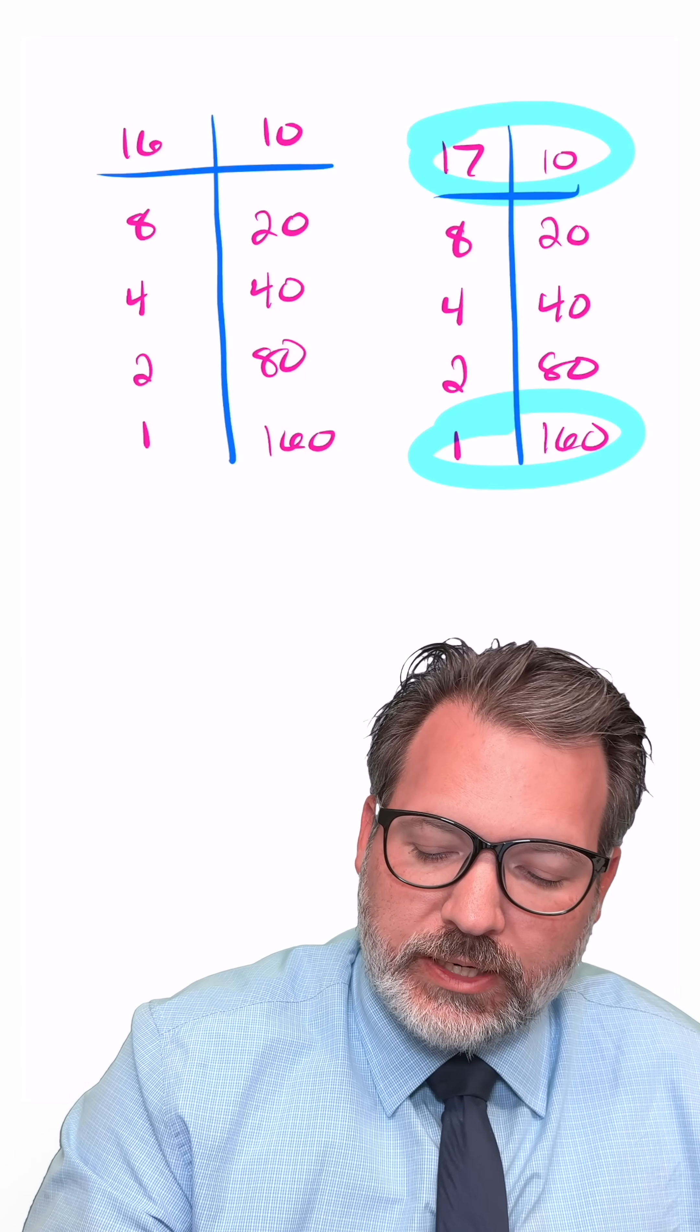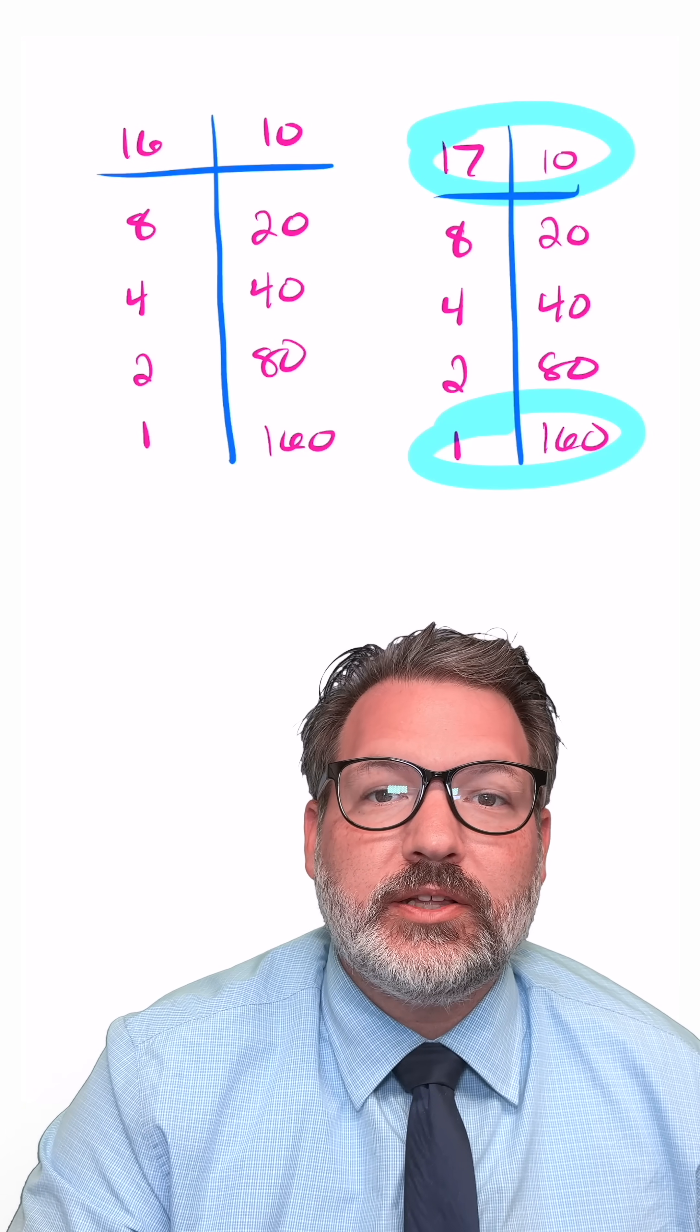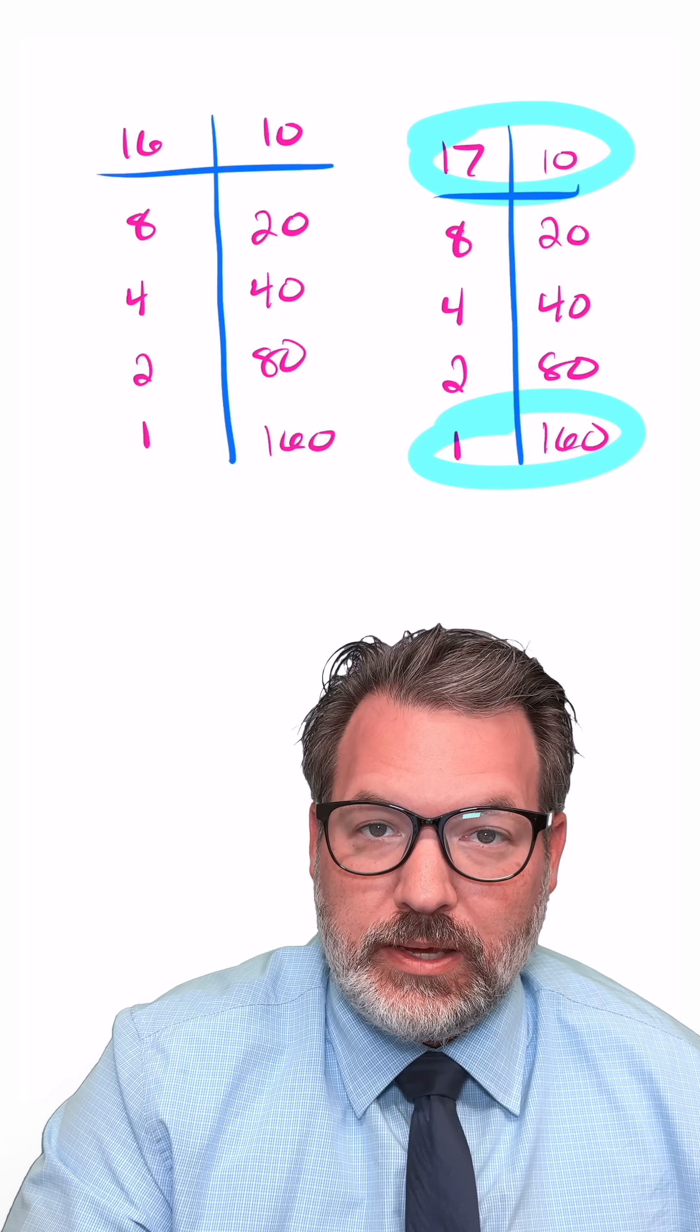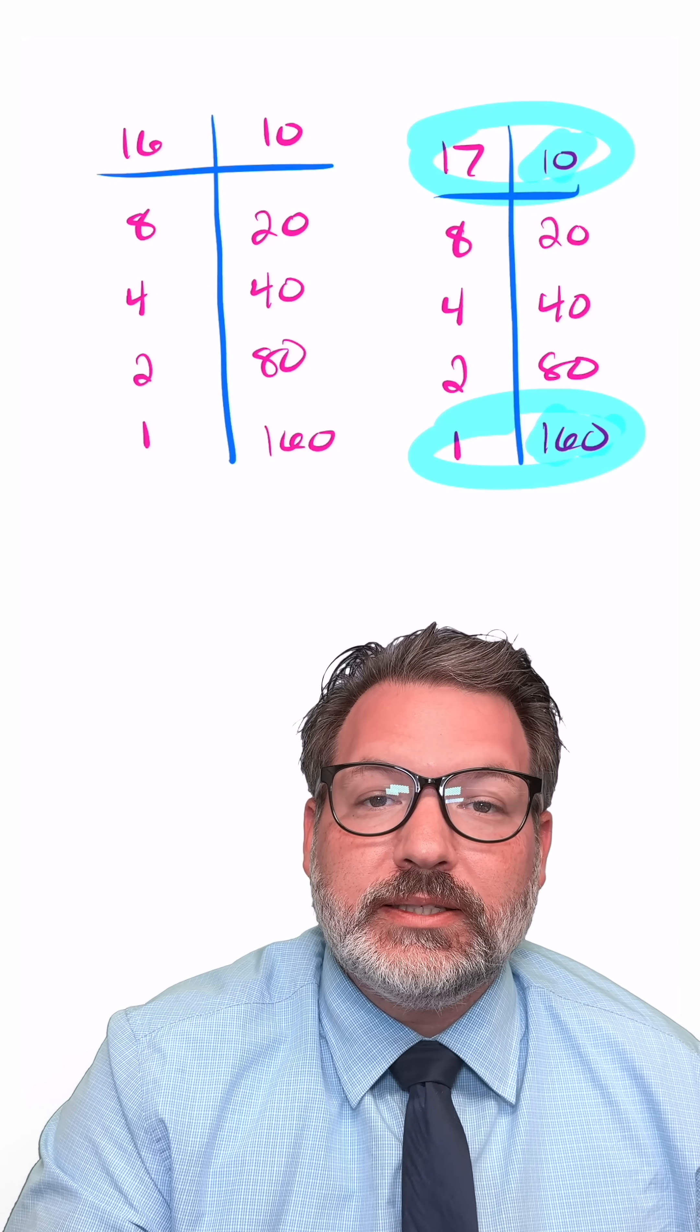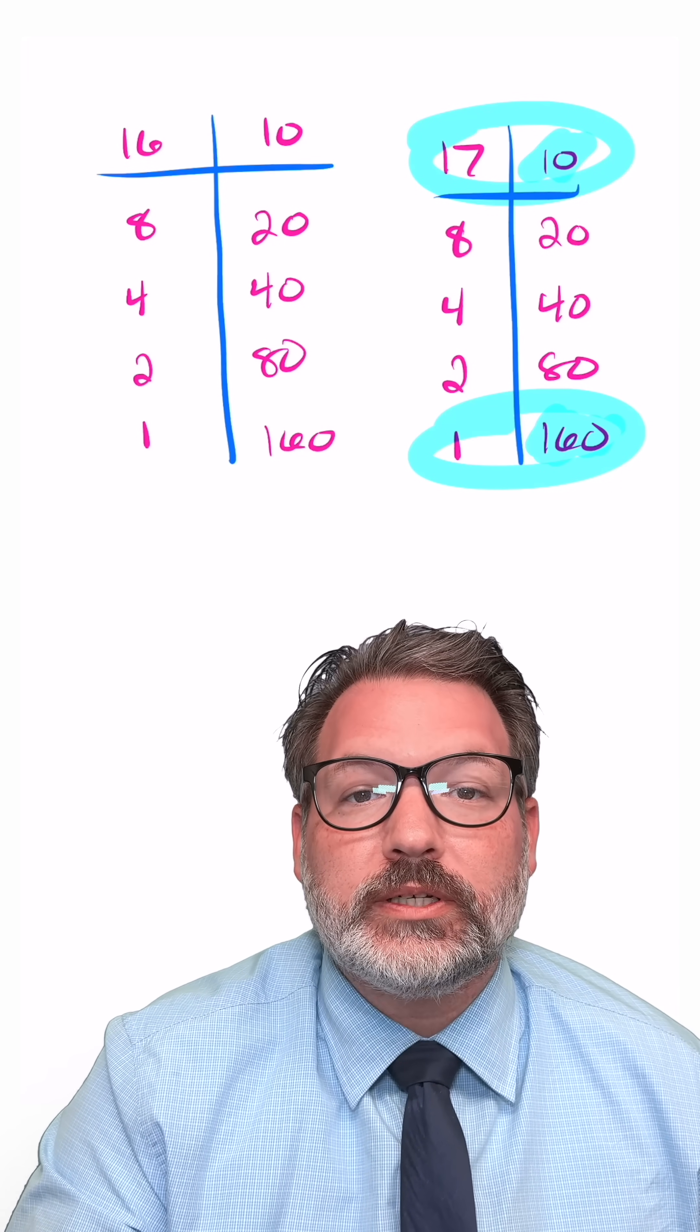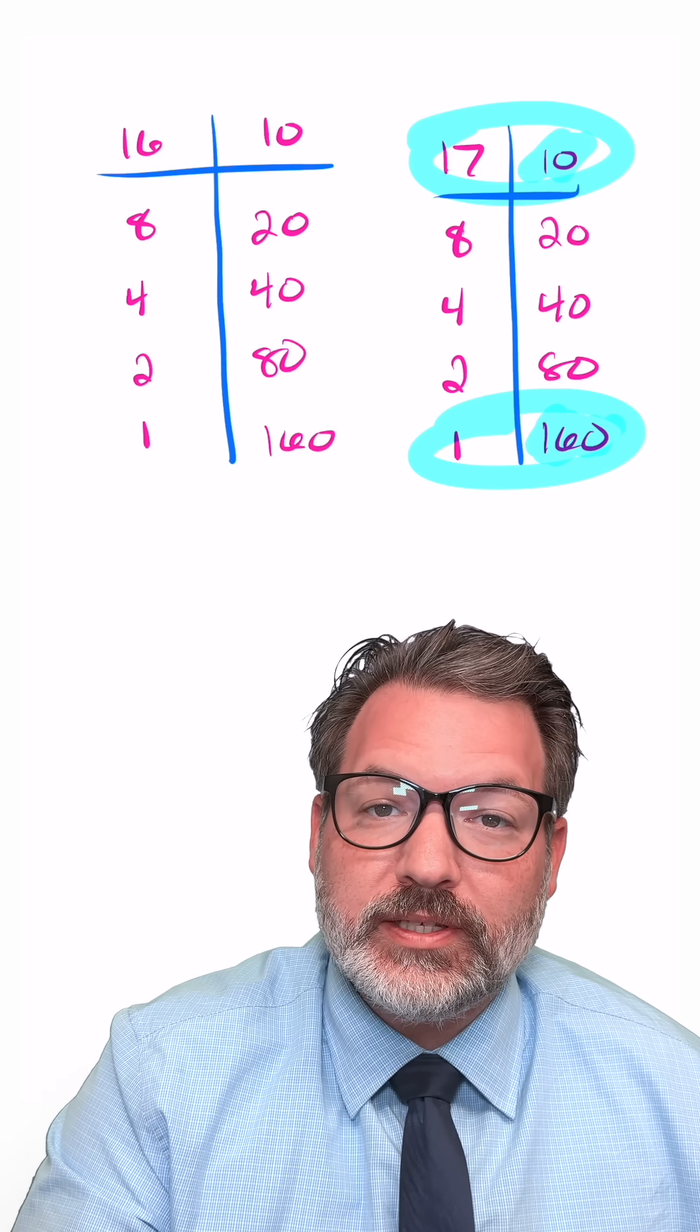Again these two tables look almost identical but this time there are two odd numbers on the left and that means there are two values on the right to keep and add together. And of course 160 plus 10 makes 170. So the method has worked again. It's at this point that hopefully you can start to get a sense of why this method is working.